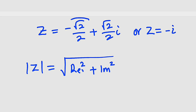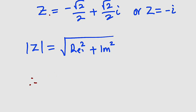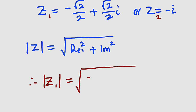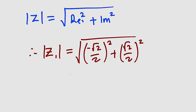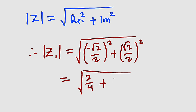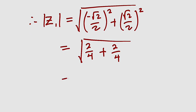Let me start with z₁. The real part is -√2/2 and the imaginary part is √2/2. So |z₁| = √((-√2/2)² + (√2/2)²) = √(2/4 + 2/4) = √1 = 1. Therefore, |z₁| = 1.